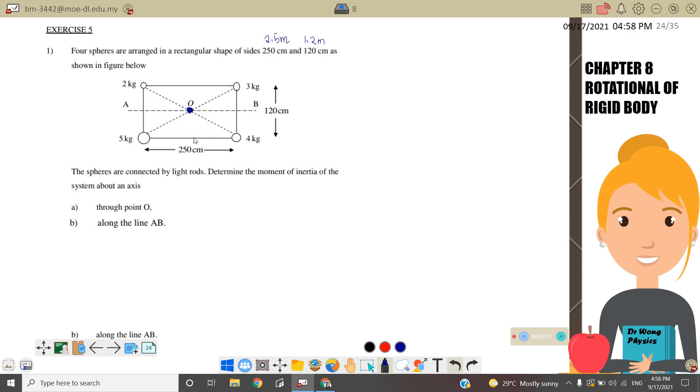We want to find the moment of inertia, meaning that I equals M1 R1 square plus M2 R2 square plus M3 R3 square plus M4 R4 square. Where M1 is 2 kg and the radius is from the sphere to the central point, we must find what the radius is.